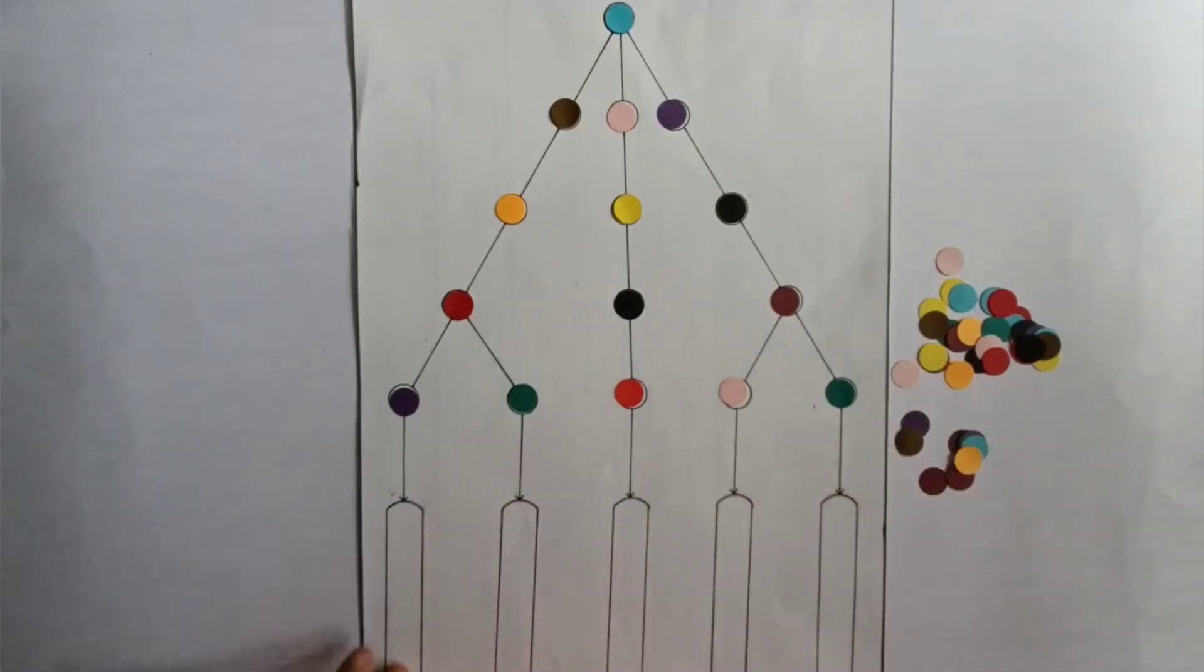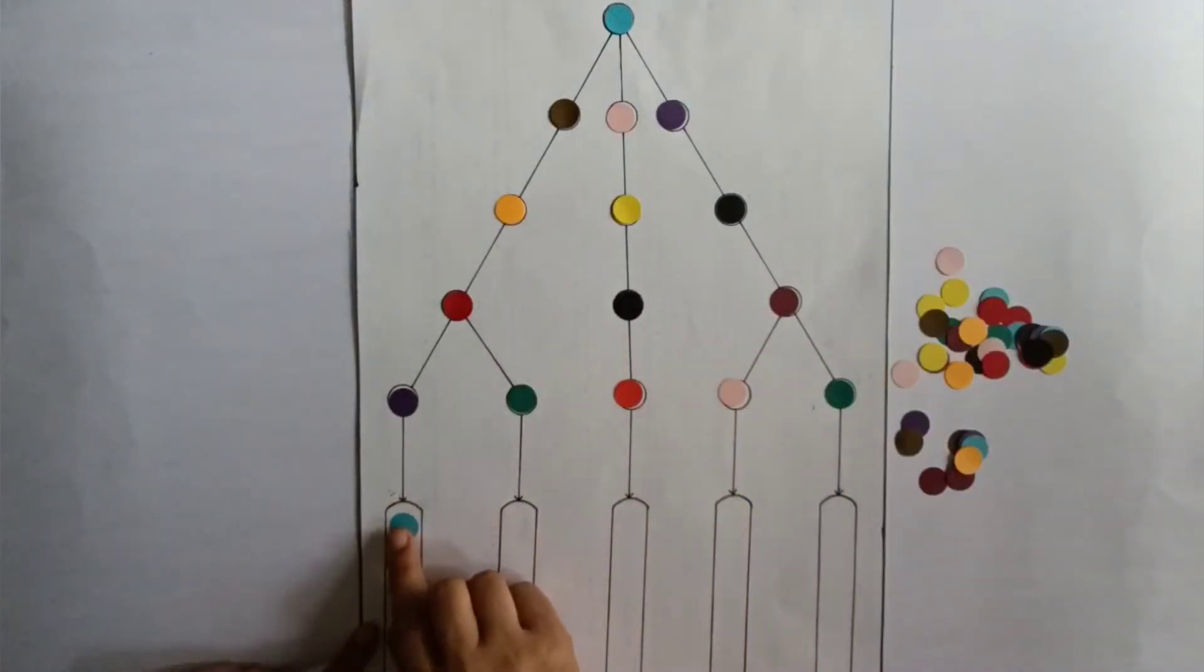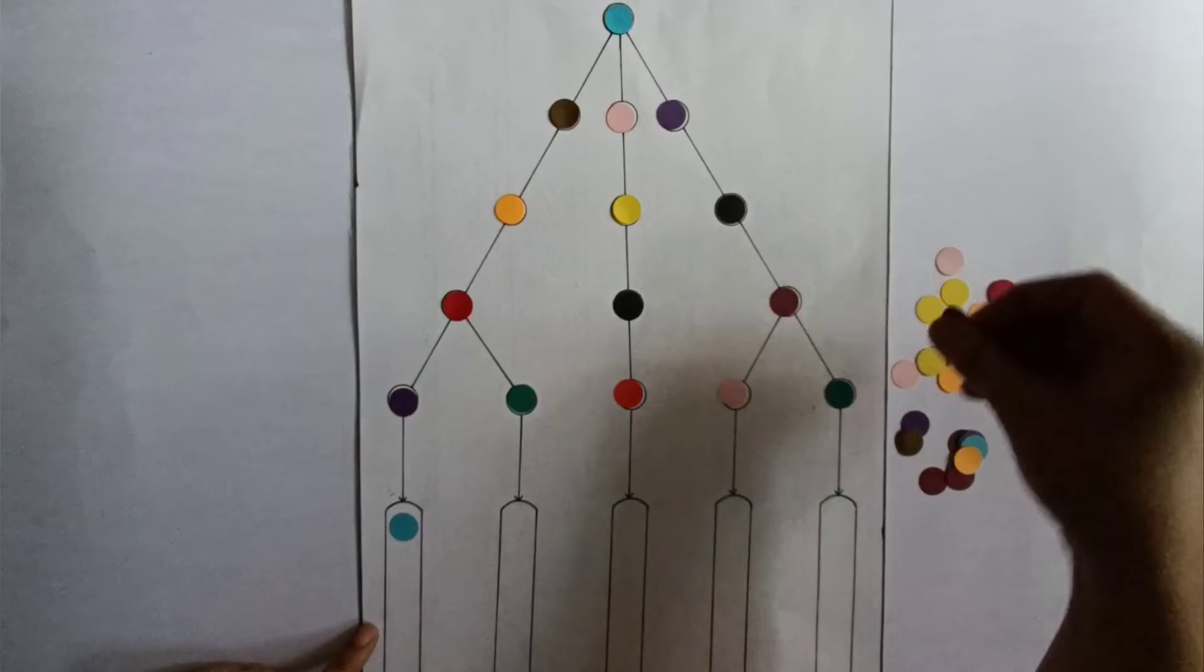The child is supposed to first recognize the first color in the flow pattern, which is blue. The child will take it and place it here.